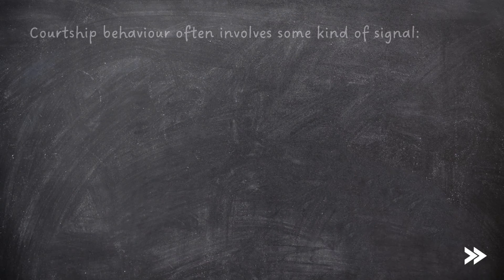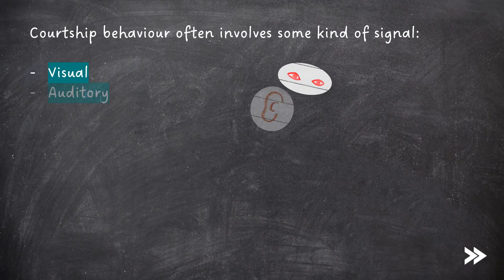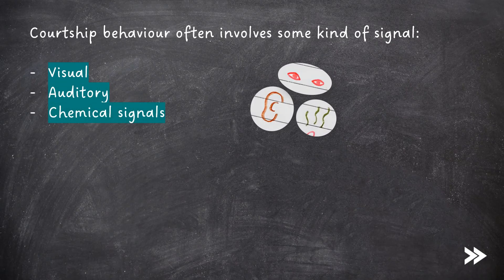Courtship behaviour often involves some kind of signal. This can be visual, auditory, chemical, or the signal may be tactile.